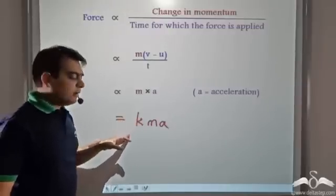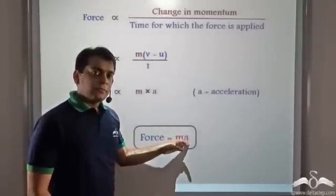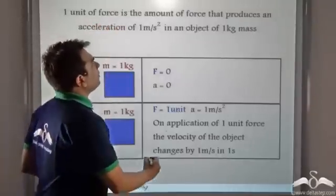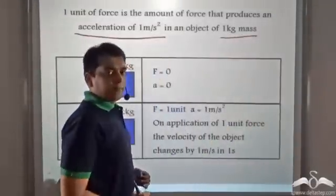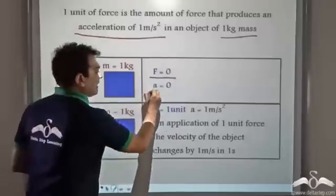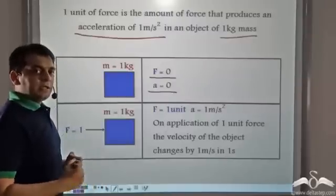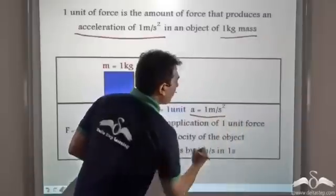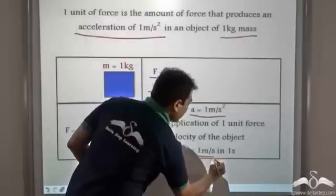The unit of force is defined in such a manner that K is equal to 1. Therefore, we get force equals mass into acceleration. How exactly is this unit of force defined? One unit of force is the amount of force that produces an acceleration of 1 meter per second squared in an object of mass 1 kg. That is, if we have an object of mass 1 kg which is initially at rest and we start applying a unit force onto it, its acceleration would be 1 meter per second squared — meaning the velocity of this object would change by 1 meter per second every second.